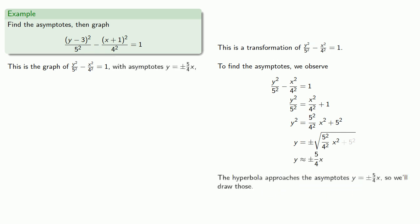So the hyperbola approaches the asymptotes y equals plus or minus 5 fourths x, so we'll draw those. But since they're not actually part of the graph, we'll use dotted lines.